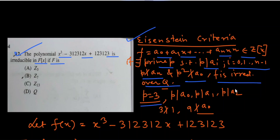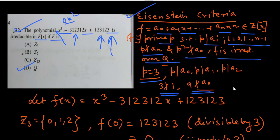Now if we take p = 3, then p divides this term, p divides this term, and 3 divides 0. But 3 does not divide the coefficient of the highest degree term, so 3 does not divide 1, and 3² = 9 does not divide a₀ (the constant term). This clearly says that f is irreducible over Q. You can also discard the first three options by checking irreducibility simply.